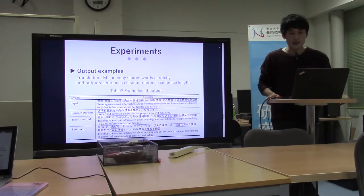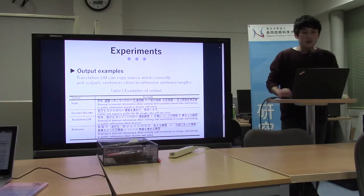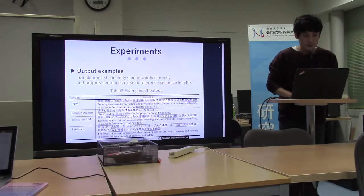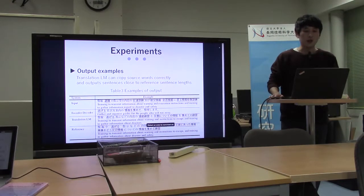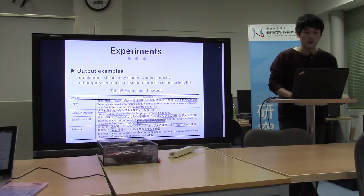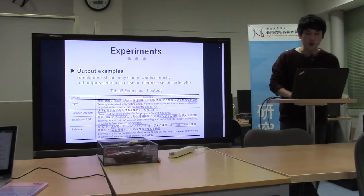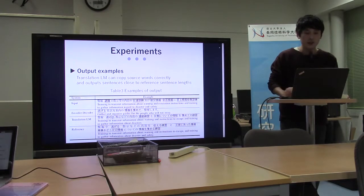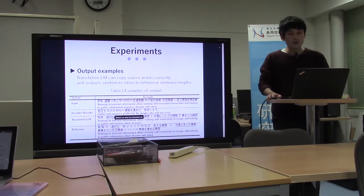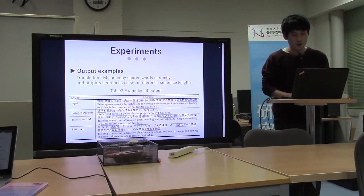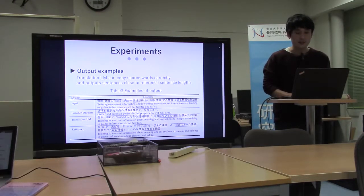This is an example of the output. The translation language model can copy source words more correctly than the encoder-decoder model and outputs sentences closer to the reference sentence length.